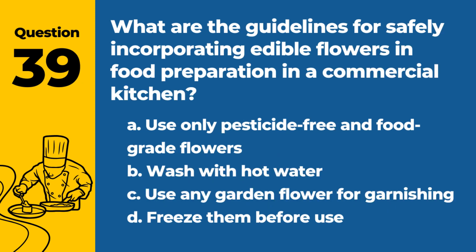Question 39. What are the guidelines for safely incorporating edible flowers in food preparation in a commercial kitchen? A. Use only pesticide-free and food-grade flowers. B. Wash with hot water. C. Use any garden flower for garnishing. D. Freeze them before use. Answer: A. Use only pesticide-free and food-grade flowers. When incorporating edible flowers in food preparation, it is important to use only those that are pesticide-free and safe for consumption.